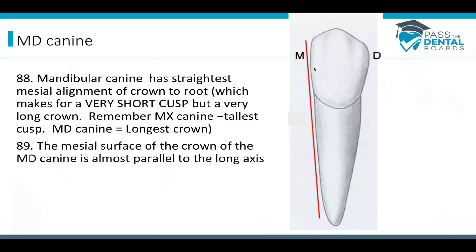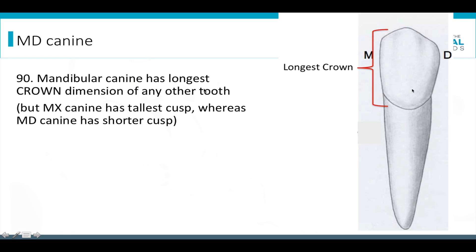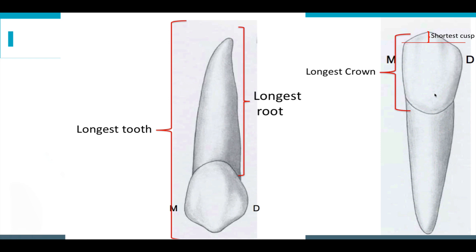Moving on to the mandibular canine: it has the straightest mesial alignment from crown to root, and that makes for a very small cusp tip even though it has the longer crown. The mesial surface of the crown is almost parallel to the long axis of the tooth because of how straight it is. The mandibular canine has the longest crown dimension of any tooth. But remember, the maxillary canine has the tallest cusp, whereas the mandibular canine has a short cusp.